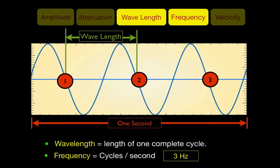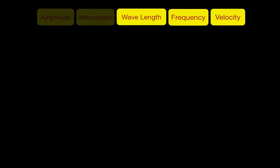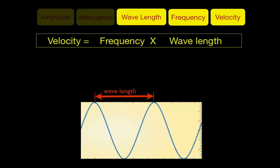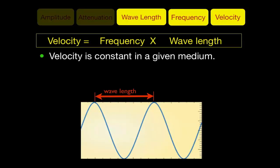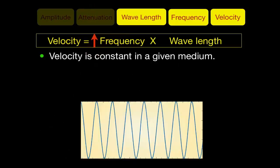In ultrasound we are speaking about millions of these cycles per second. Wavelength and frequency are related through velocity: velocity equals frequency multiplied by wavelength. Velocity is constant in a given medium, though it may differ between media. So if we increase the frequency, the wavelength will decrease — the higher the frequency, the shorter the wavelength.